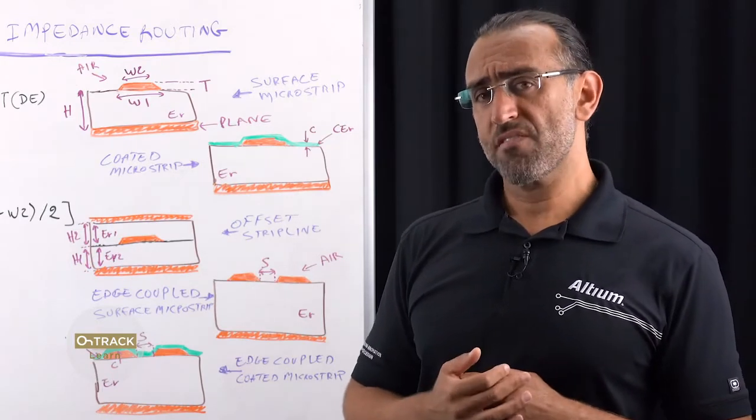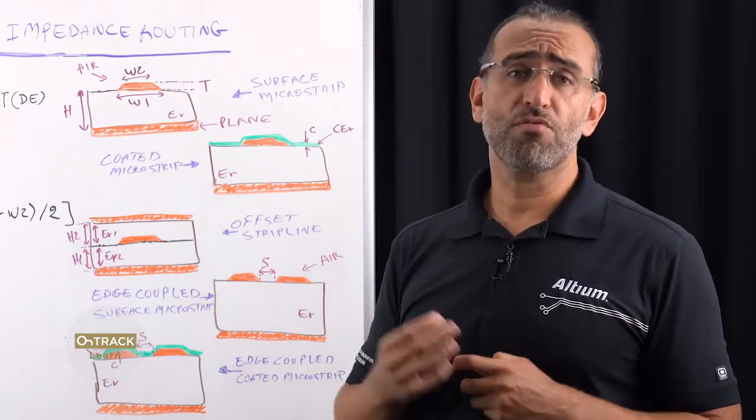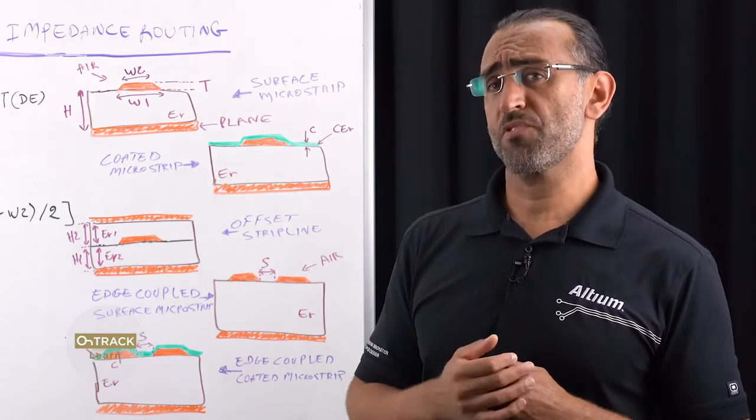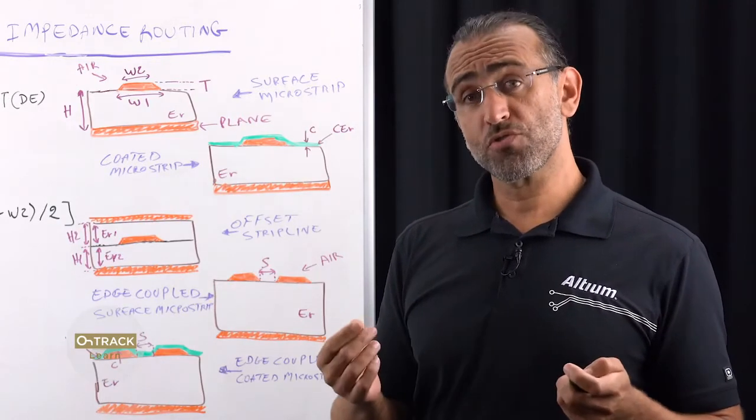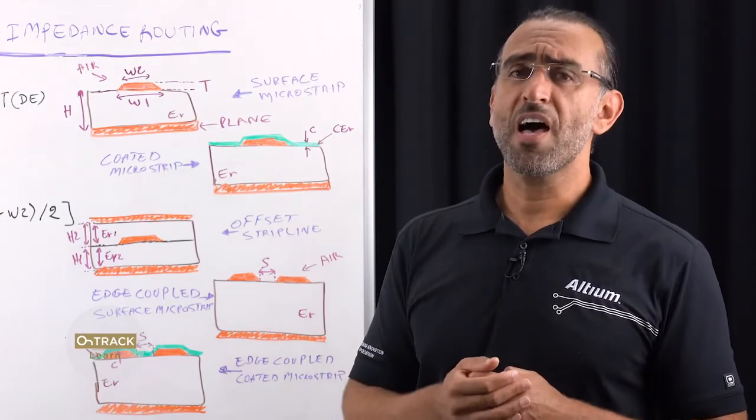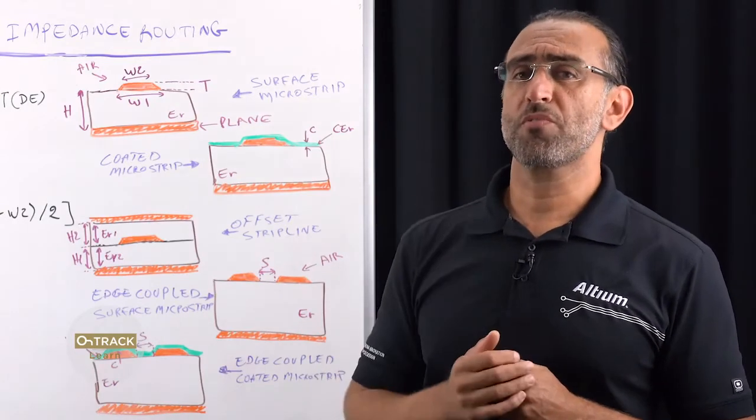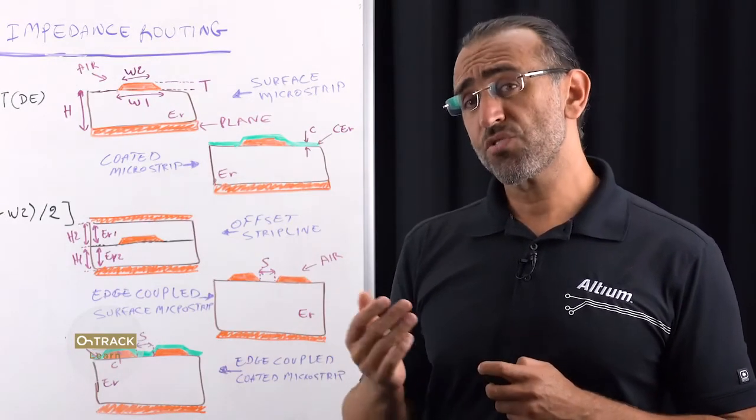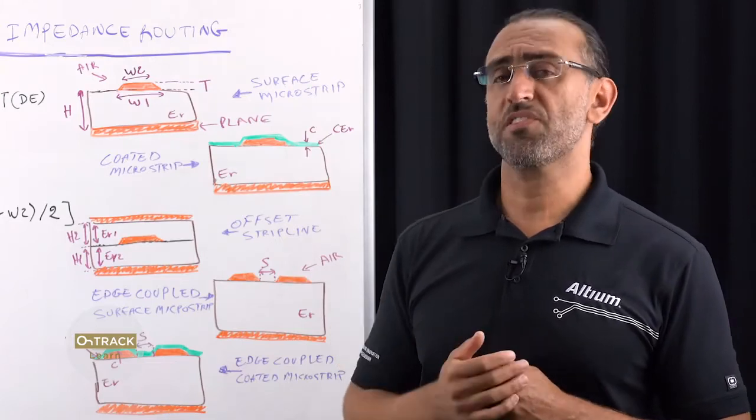If, for example, you have a finished trace with an impedance target of 50 ohms with a plus minus 10% tolerance, then a manufacturer trace with 55 ohms is within tolerance. However, it doesn't leave much room for your manufacturer to move, and this could really lower the yield. So keep this in mind.